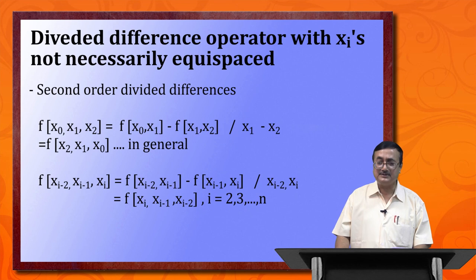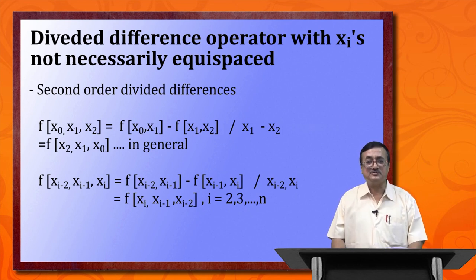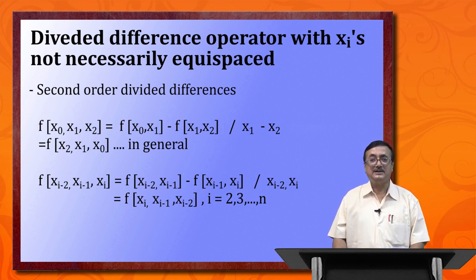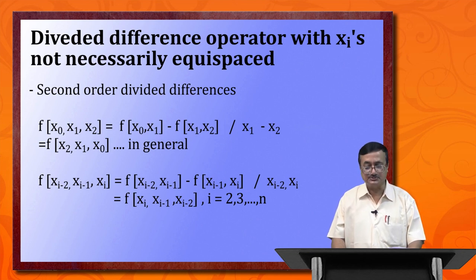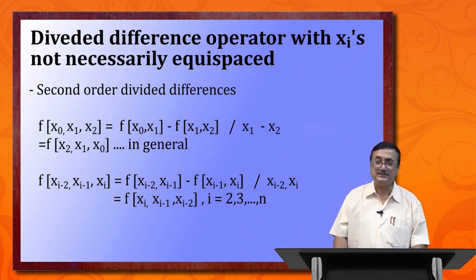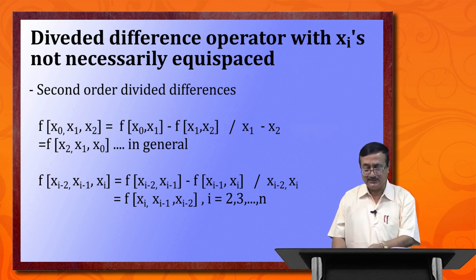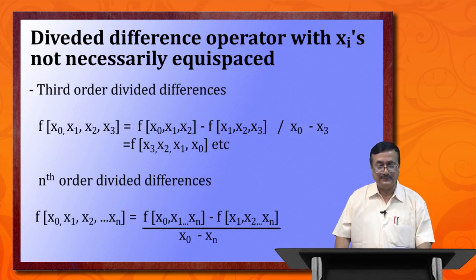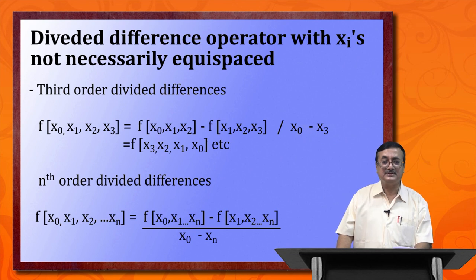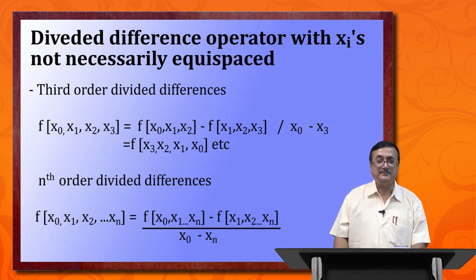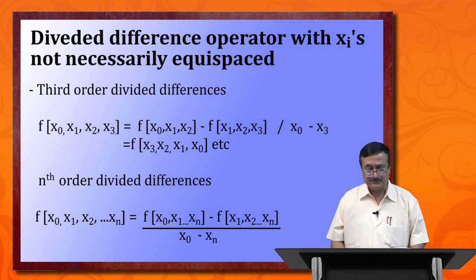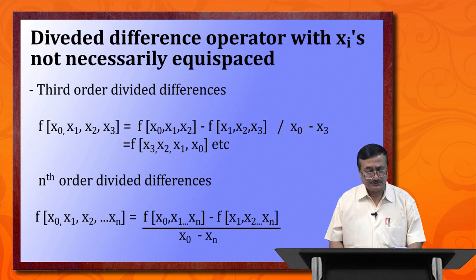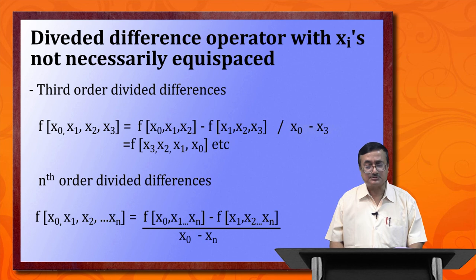The second-order divided difference is defined as f[x0, x1, x2], and again we find that f[x0, x1, x2] = f[x2, x1, x0]. In general, the nth-order divided difference f[x0, x1, x2, ..., x_n] is defined accordingly, and it equals f[x_n, x_{n-1}, ..., x1, x0] — confirming symmetry.